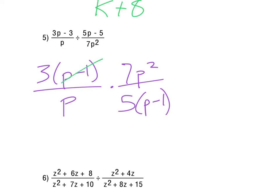So notice, again there, the p minus 1's will cancel. We've got a p and a p squared, so that p will cancel out one of those two p's. The 3, 7, and 5 don't reduce at all, so we end up with 21p over 5 as the result.